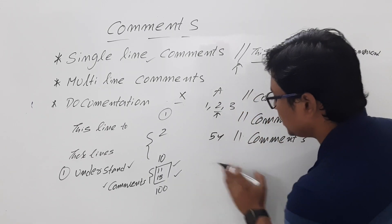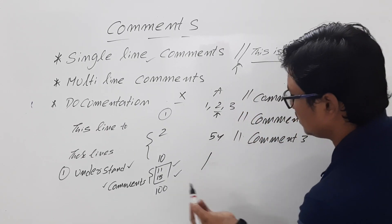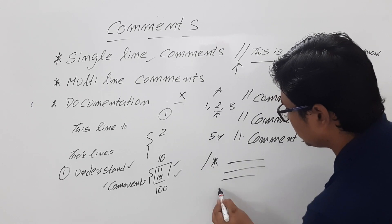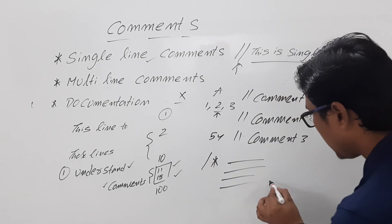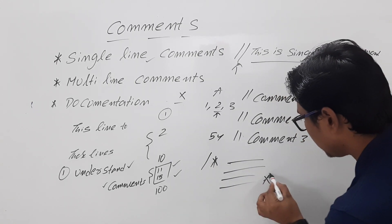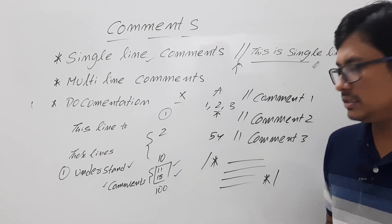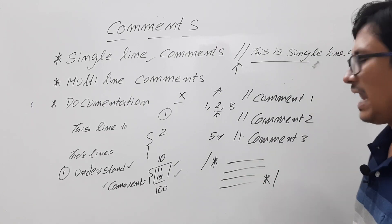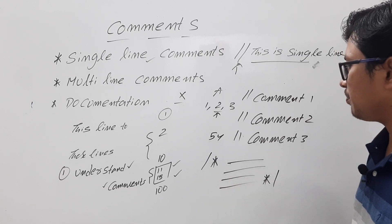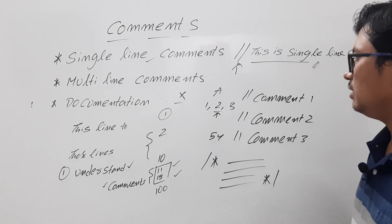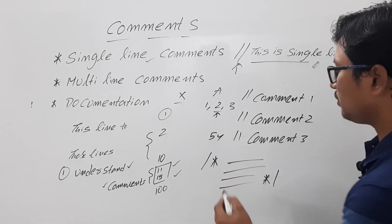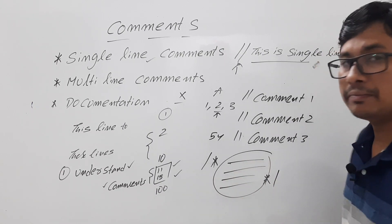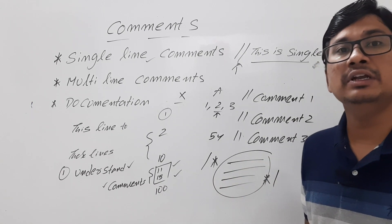You can simply write multiple single lines, or for simplicity you can write slash star at the beginning, then write the multiple line comments, and at the end close with star slash. So this is the purpose of multi-line comments. Whatever you write between them, the compiler will ignore.